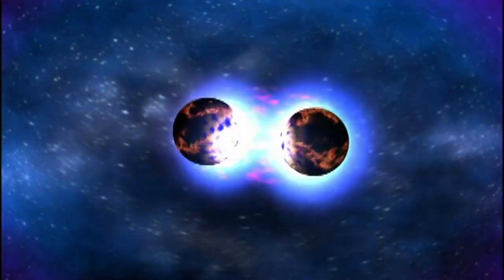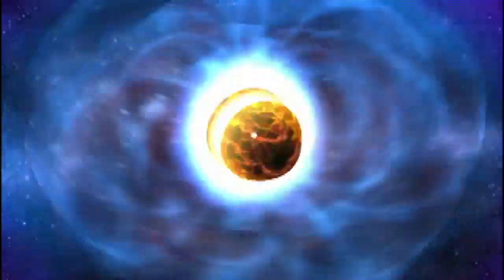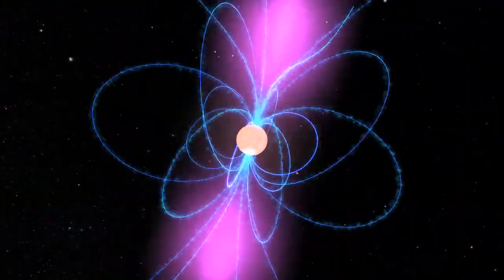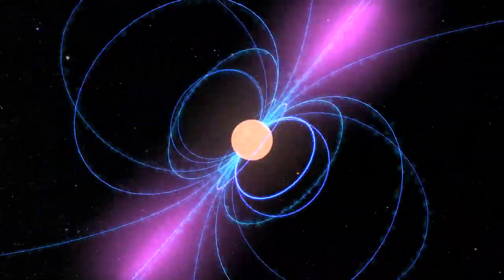Astronomers suspected that crashing neutron stars could explain short bursts. A neutron star is what remains when a star several times the mass of the Sun collapses and explodes.